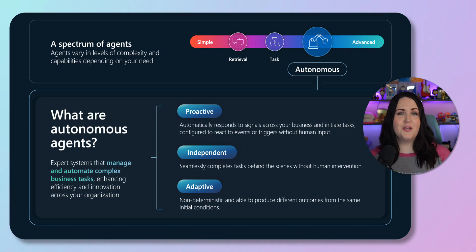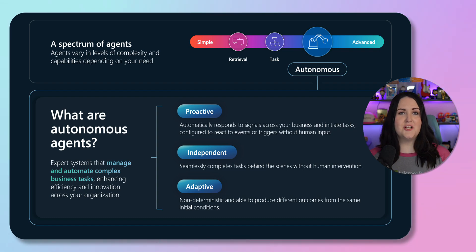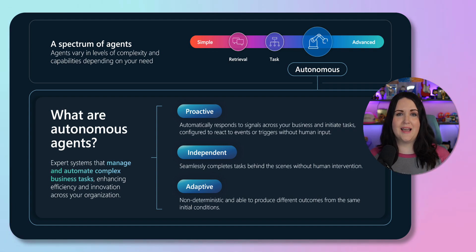We can also have task-based agents, which are connected to specific workflows or processes. These operate based on knowledge, skills, and rules-based automation, and their primary purpose is to automate repetitive tasks.